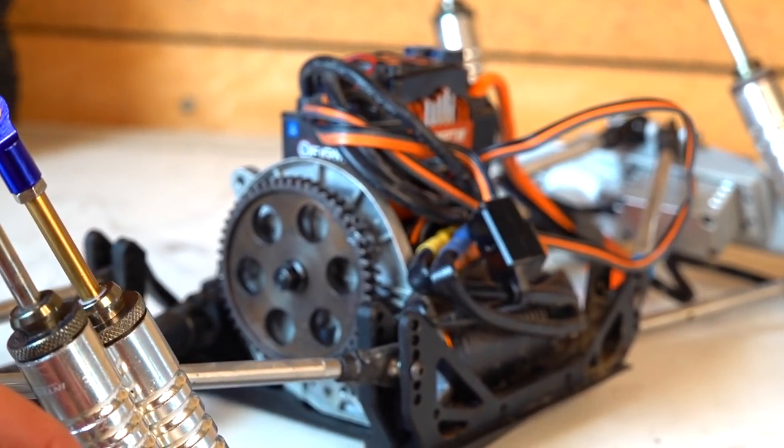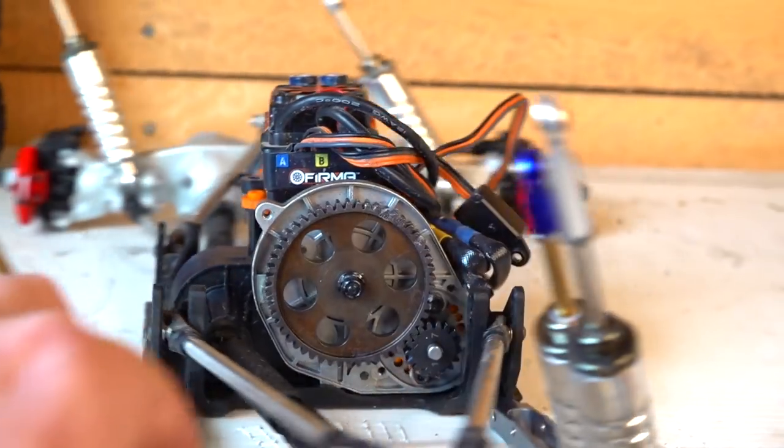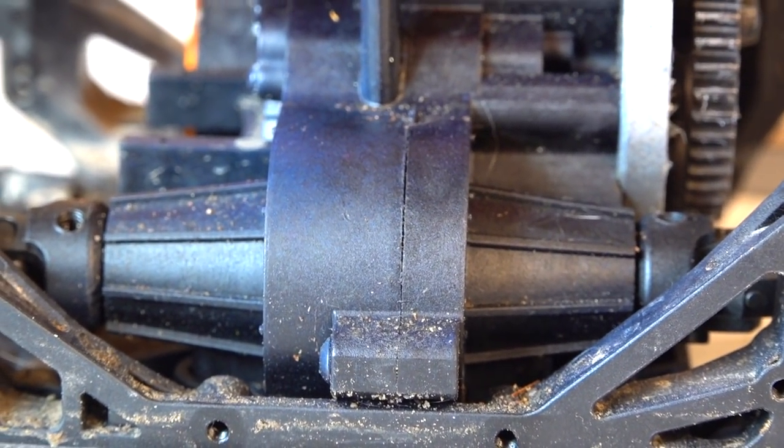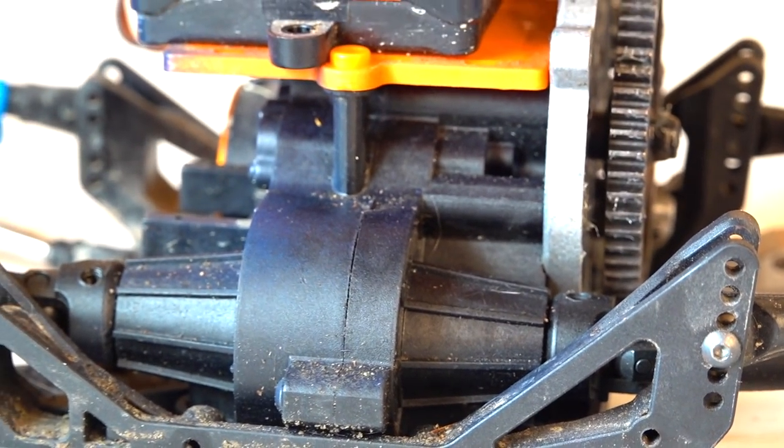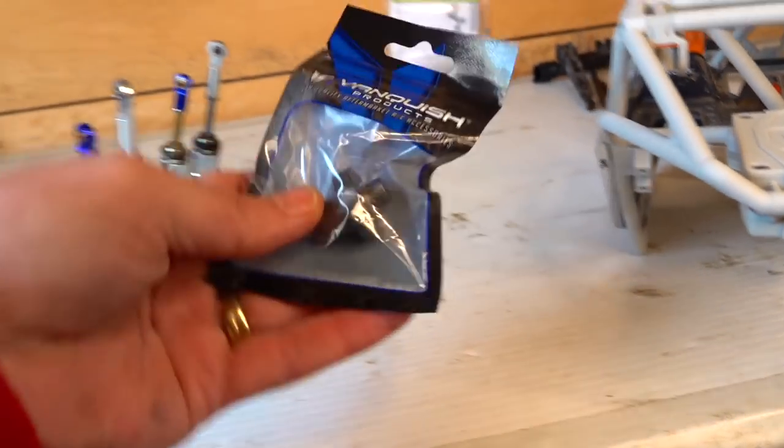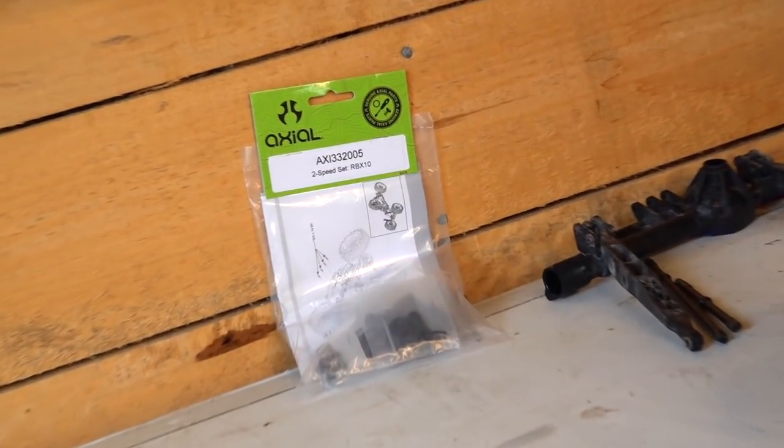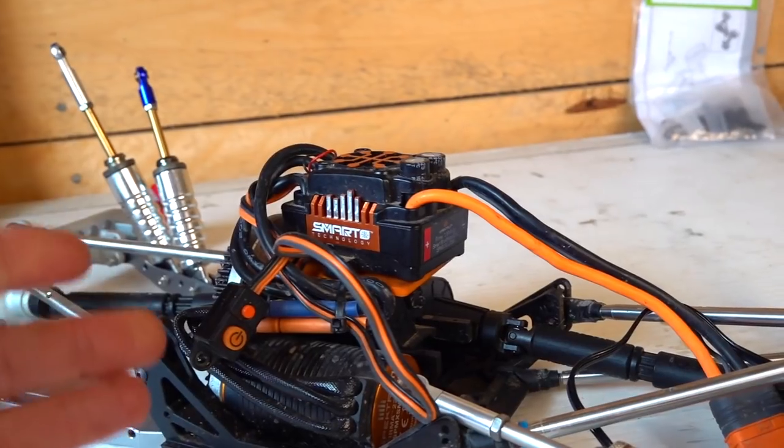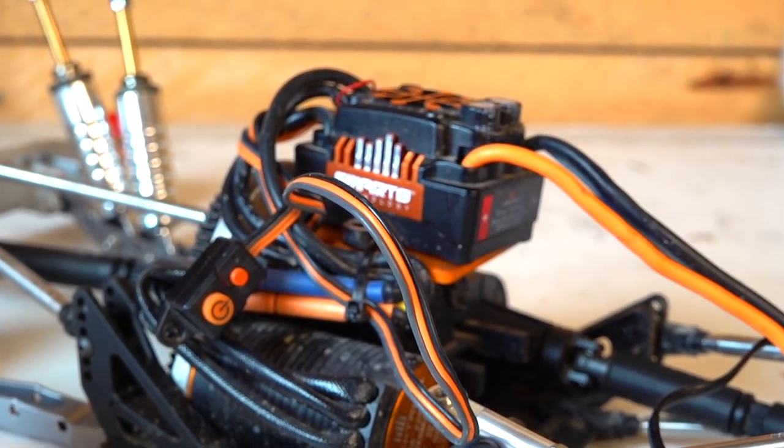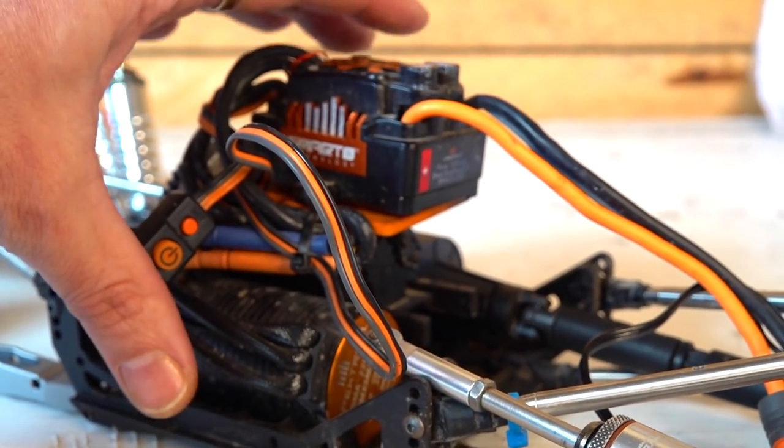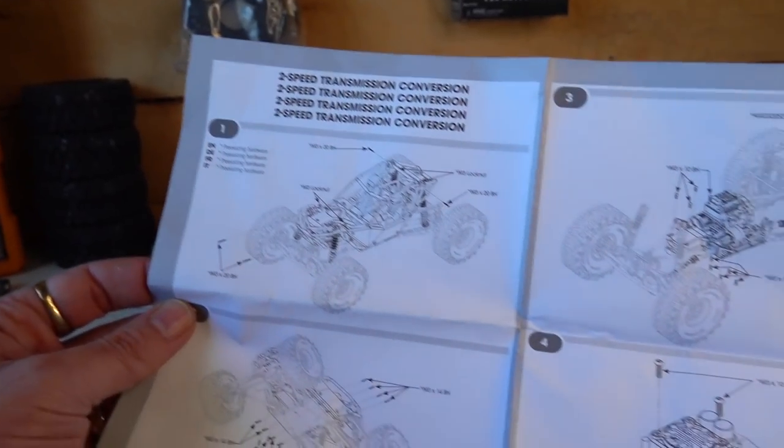You'll see that I took the cover off of the transmission and the motor, and there is the center differential. A lot of people that have the Rift don't know that their RC actually has a third differential in there. Today I'm gonna go ahead and put that locker into the center as well as putting in the two speed transmission conversion. Which means not only am I gonna be able to keep the original motor and ESC, which I actually think is pretty bomb, when you put in the two speed transmission, it's definitely gonna make a huge difference.